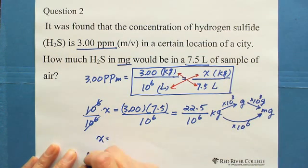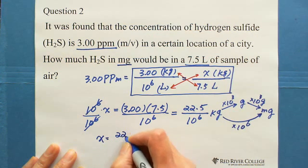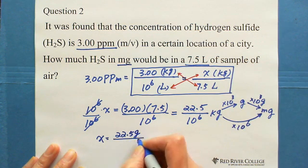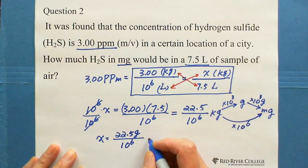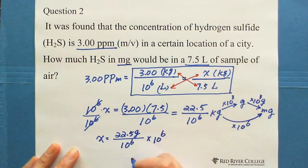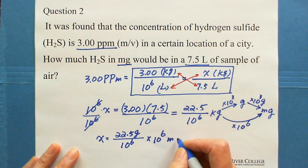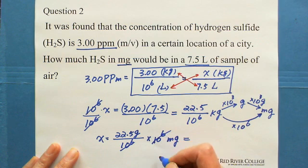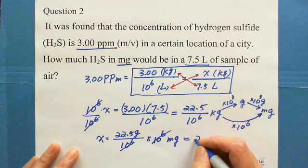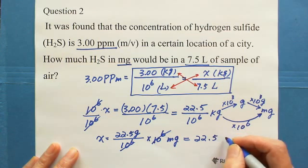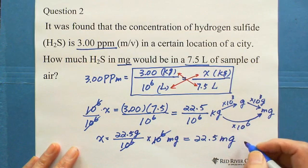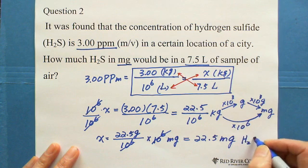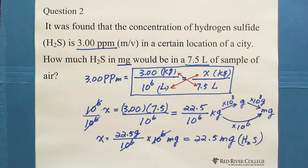So X equals 22.5 over 10 to the 6 kilograms, then multiplied by 10 to the 6 milligrams per kilogram. The 10 to the 6 cancels out, giving X equals 22.5 milligrams of hydrogen sulfide.